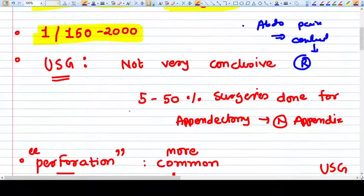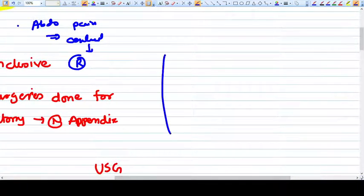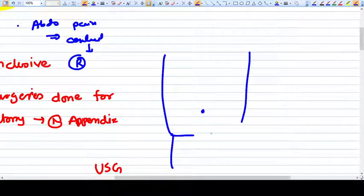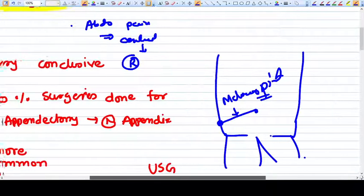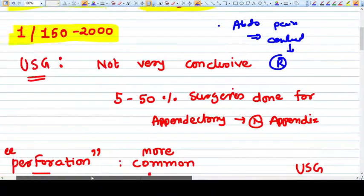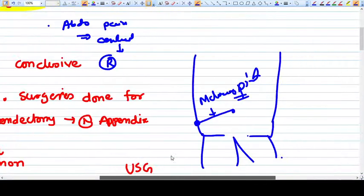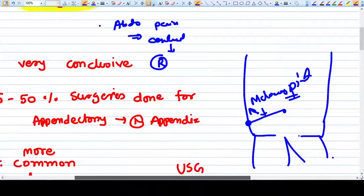The natural location of the appendix at McBurney's point is shifted. In the gravid uterus, especially in the third trimester when appendicitis is more common, the appendix is shifted backwards, laterally, and downwards. So the pain is not exactly where it is in non-pregnant patients.